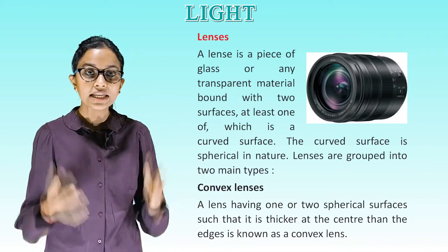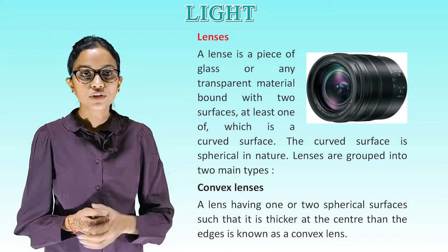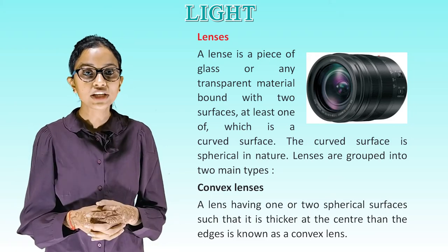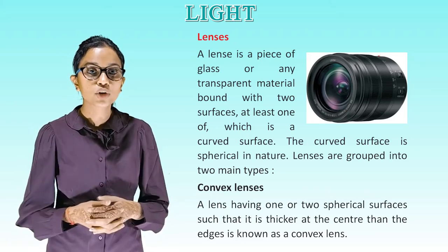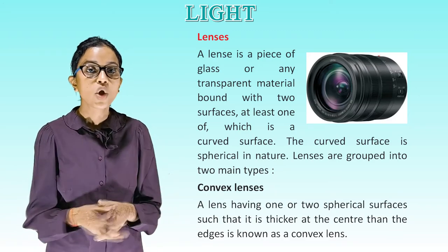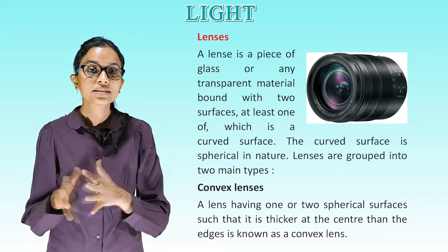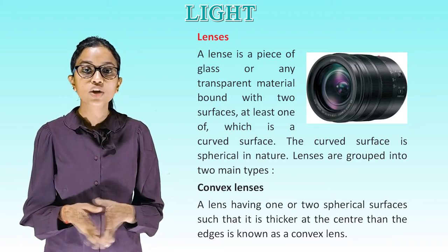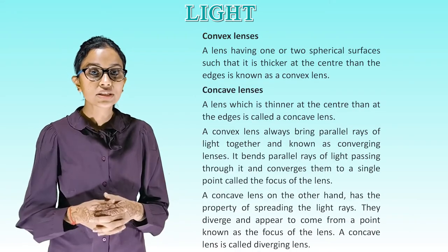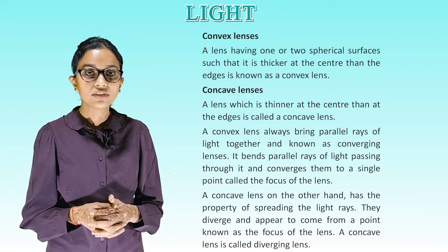Lenses: a lens is a piece of glass or any transparent material bound with two surfaces, at least one of which is a curved surface. The curved surface is spherical in nature. Lenses are grouped into two main types: convex lens — a lens thicker at the center than the edges — and concave lens — a lens thinner at the center than at the edges.